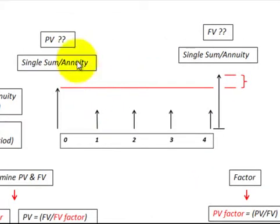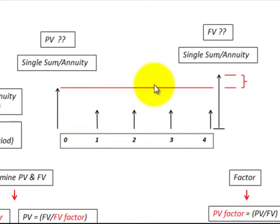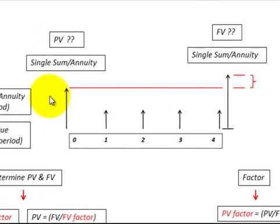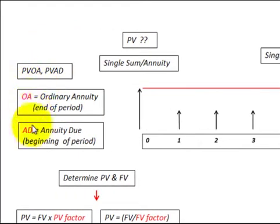Here I'm going to show you how to determine the present value and future value using these discount factors. We've got a known amount and we can use a discount factor to determine what its future value is, and vice versa. Just a note: on those formulas you'll see OA as a suffix — that stands for ordinary annuity.